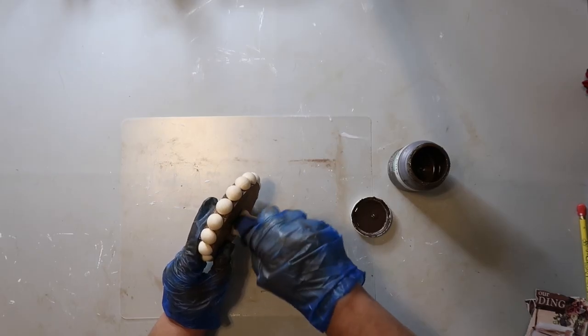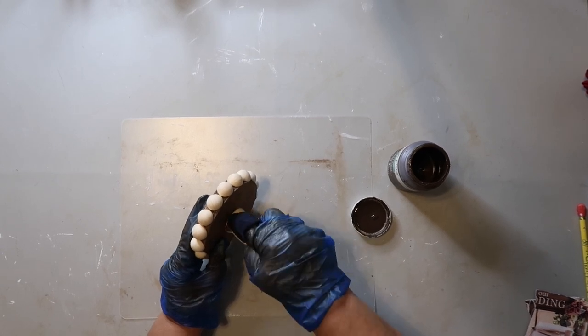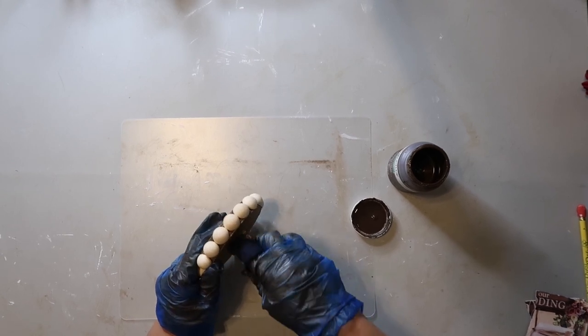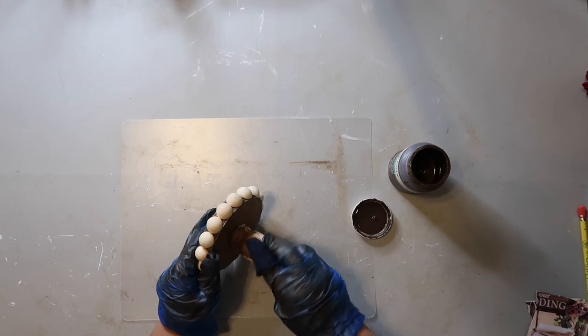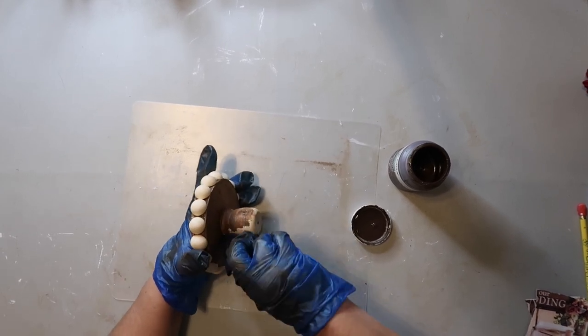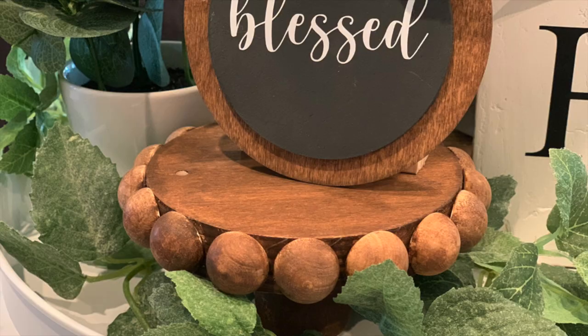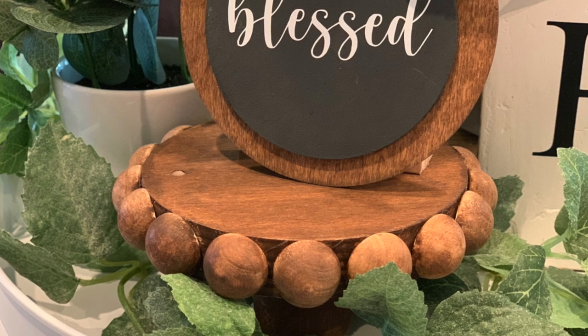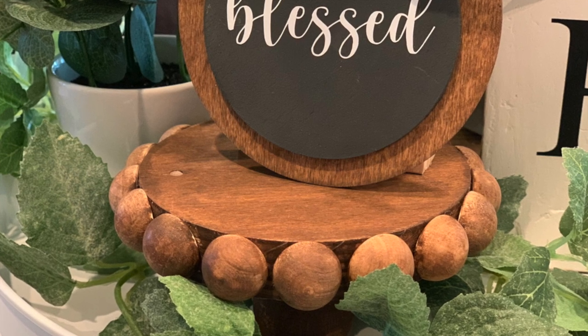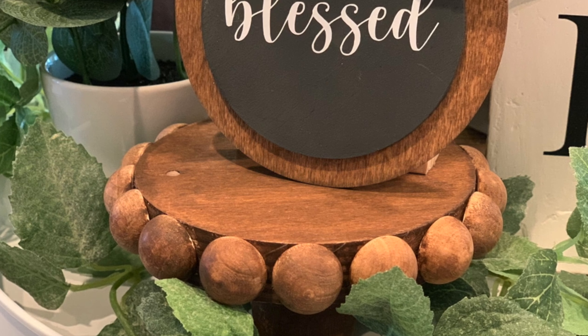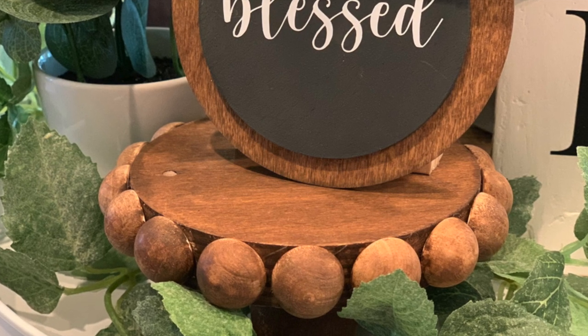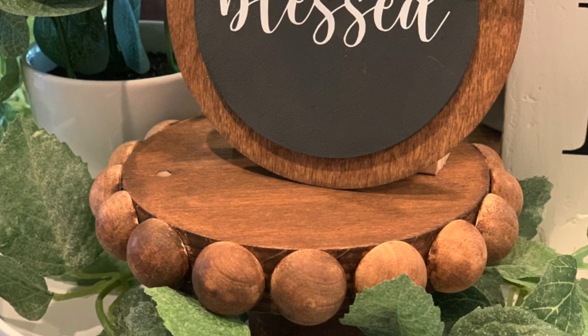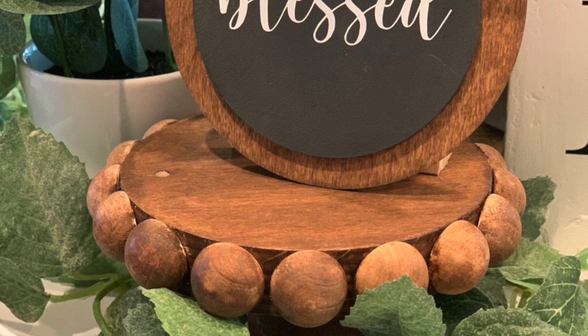Once that's all dry, I'm going back in with that Waverly Wax in the color Antique, and I'm staining that little piece that I put on the bottom, and I'll also stain the half wood beads around the perimeter of that circle. This little mini tiered stand turned out really adorable, and the total for the project was a dollar for the round circle, maybe a dollar for the beads, and less than a dollar for that bottom piece. So let's call that three dollars for that project.